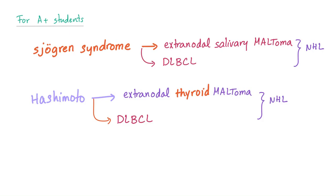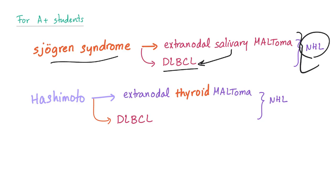For A-plus students: Sjögren's syndrome can lead to either extranodal salivary gland marginal zone lymphoma (MALT lymphoma), or directly to diffuse large B-cell lymphoma. As you know, marginal zone lymphoma can also transform into diffuse large B-cell lymphoma — both are non-Hodgkin's lymphoma. Sjögren's syndrome can involve bilateral enlargement of the salivary or parotid glands. However, if only one gland is enlarged, be very suspicious of lymphoma. A biopsy is needed to differentiate the subtype — and remember, do not use fine needle aspiration; use core needle biopsy. Similarly, Hashimoto's thyroiditis can lead to extranodal thyroid MALT lymphoma or diffuse large B-cell lymphoma, both non-Hodgkin's.